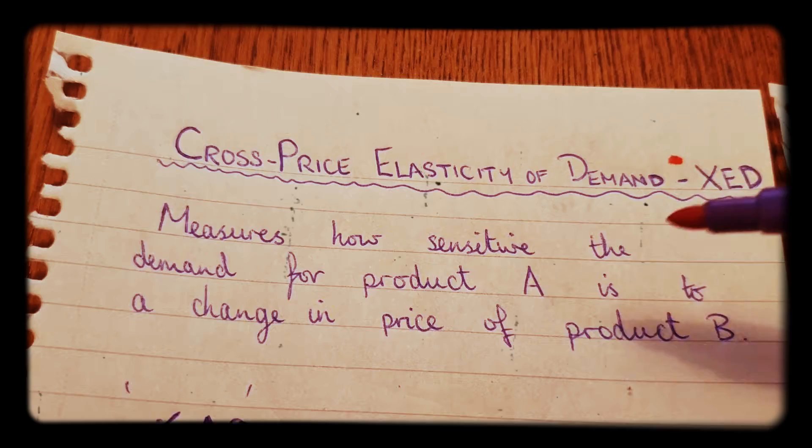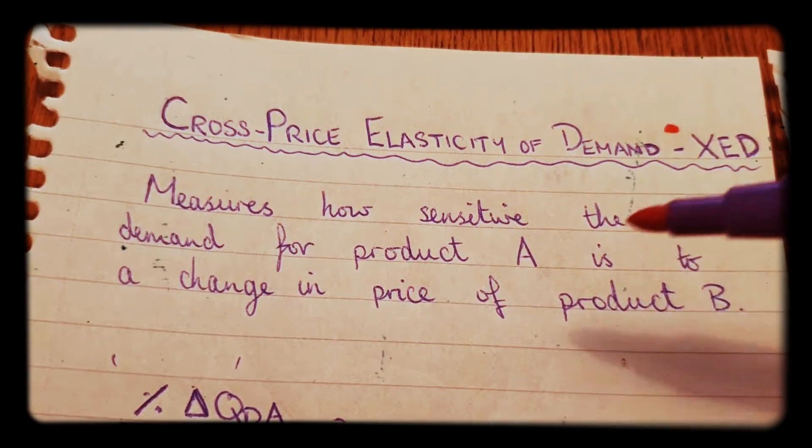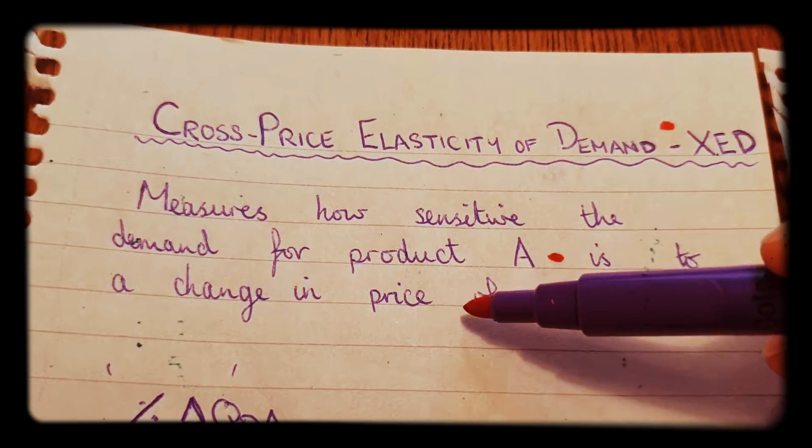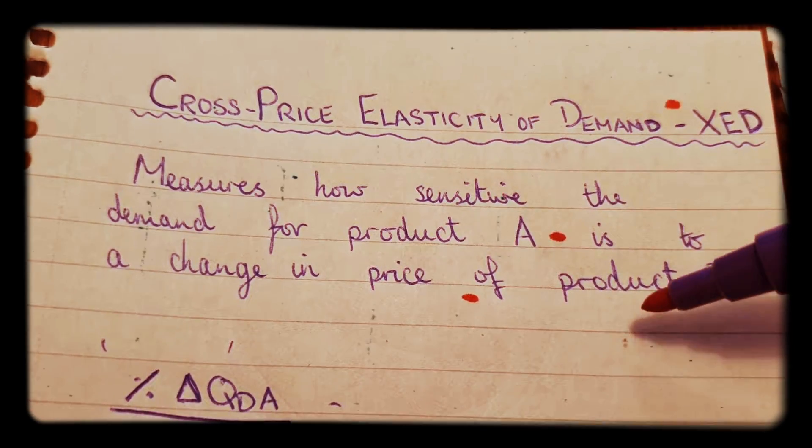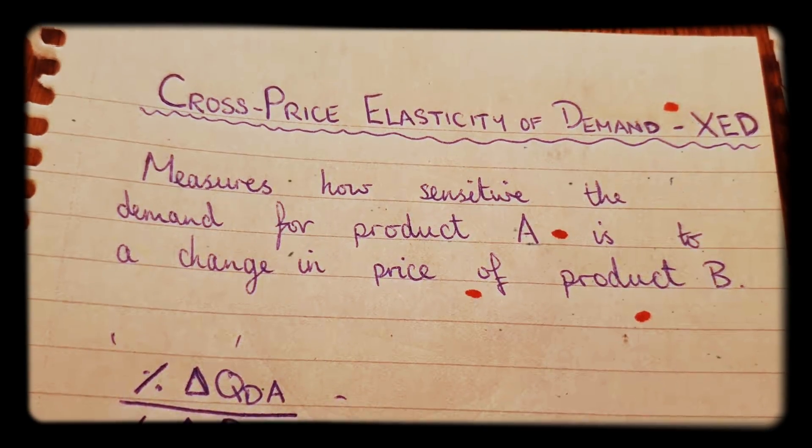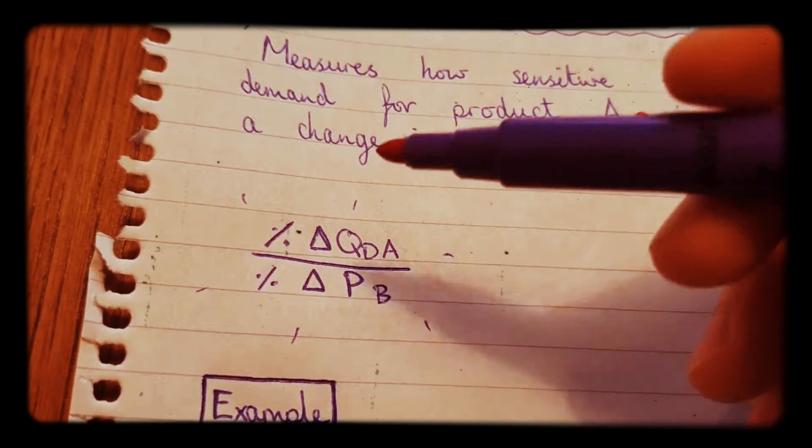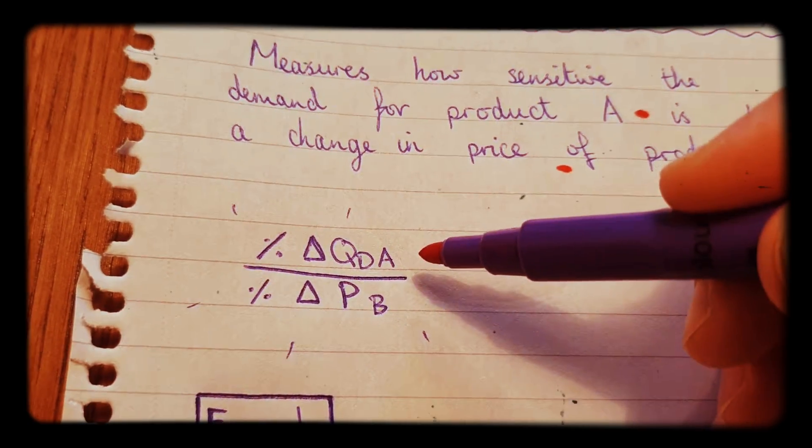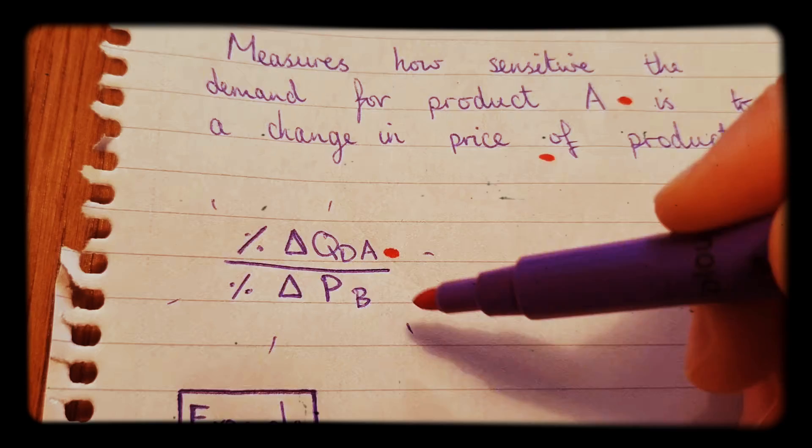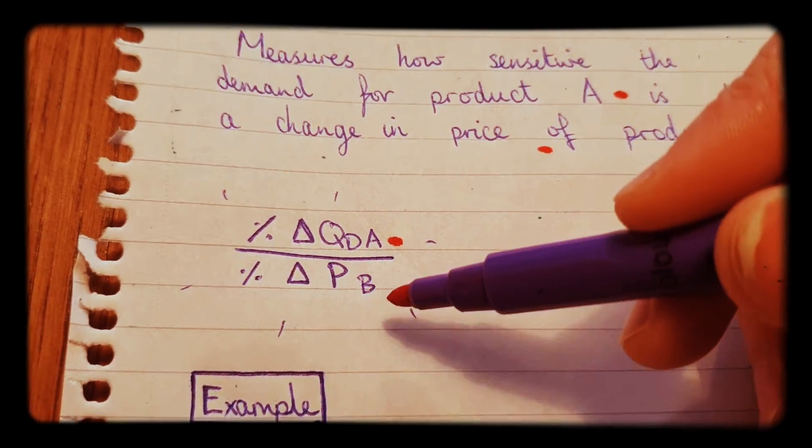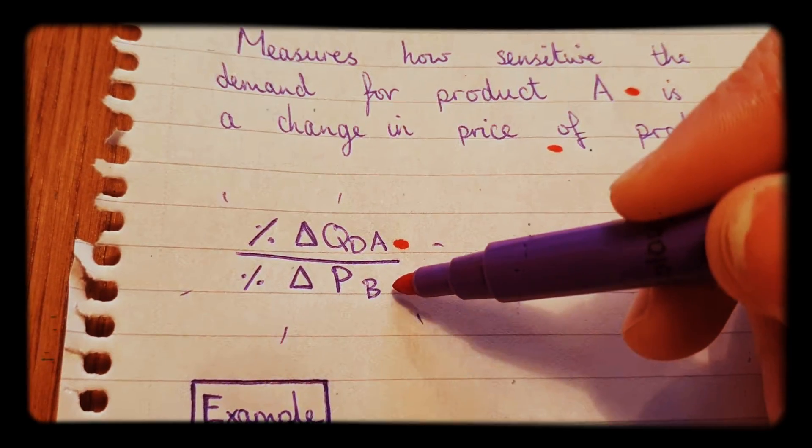It measures how sensitive the demand for product A is to a change in the price of another product, product B. So this is the formula: the percentage change of the quantity demanded for good A over the percentage change of the price for good B.